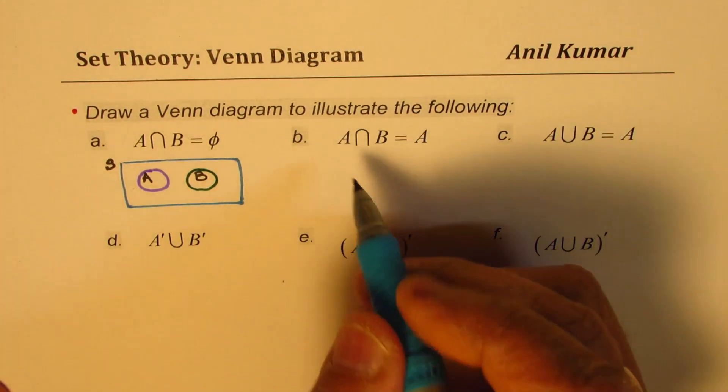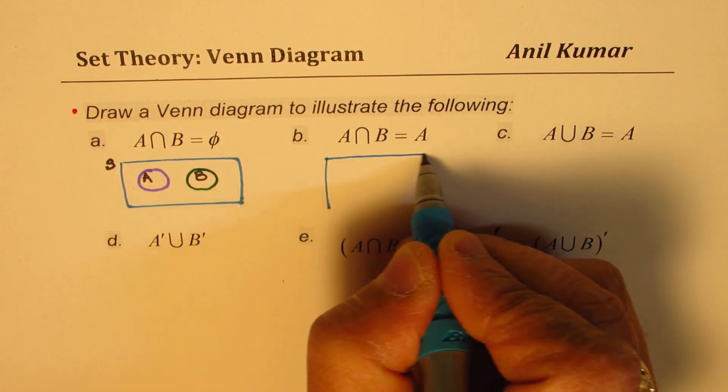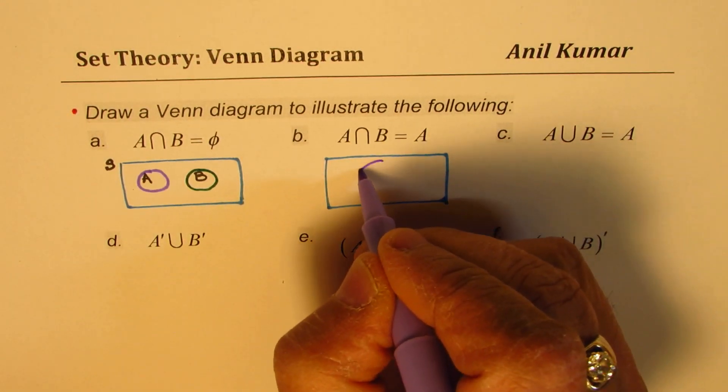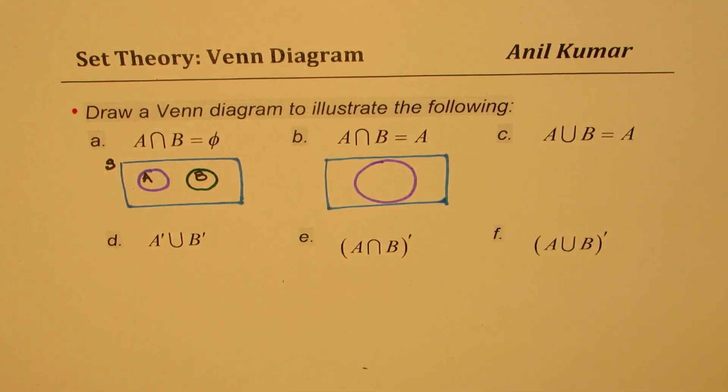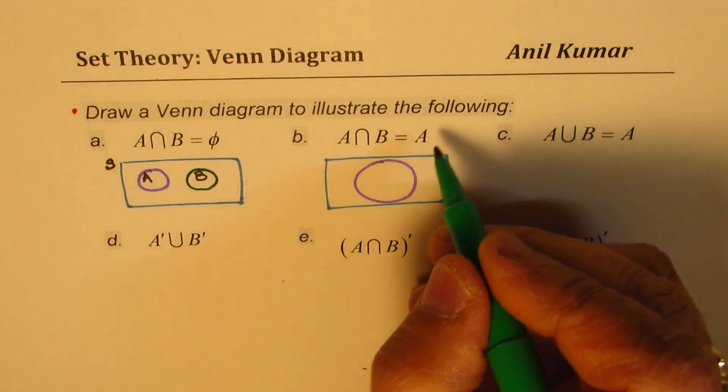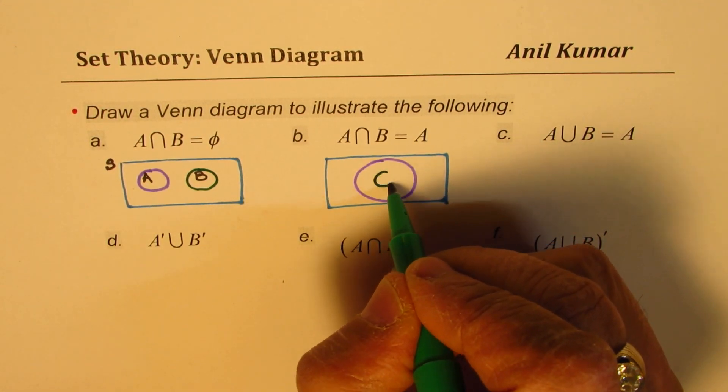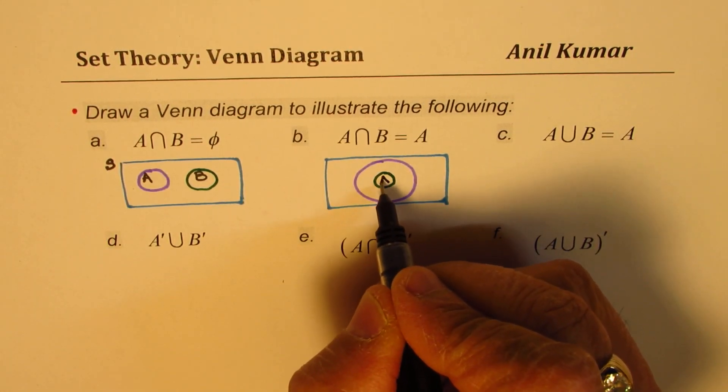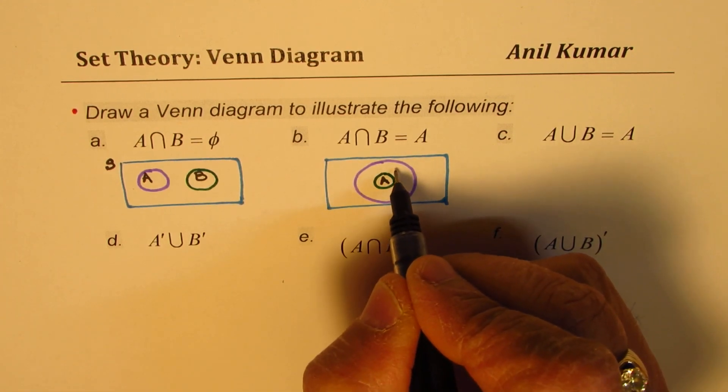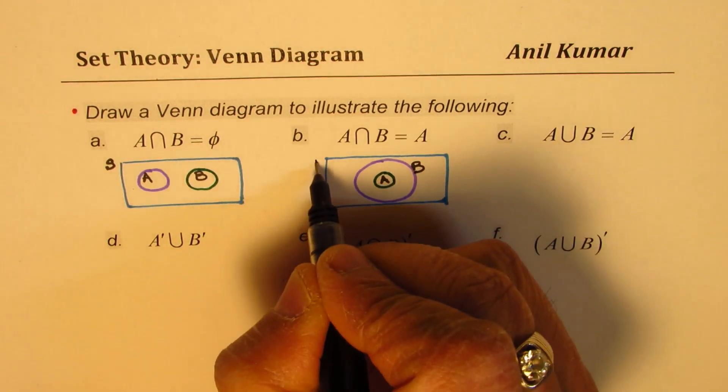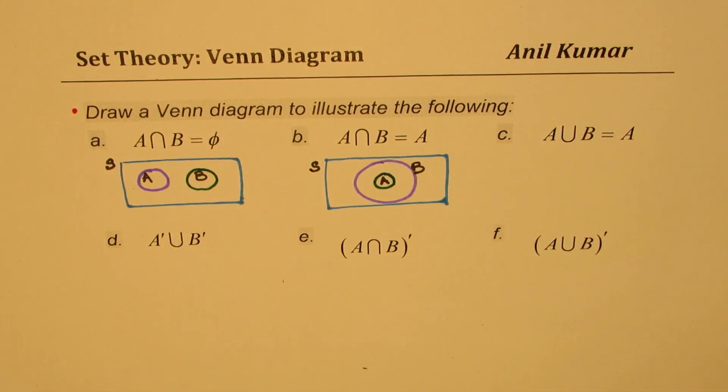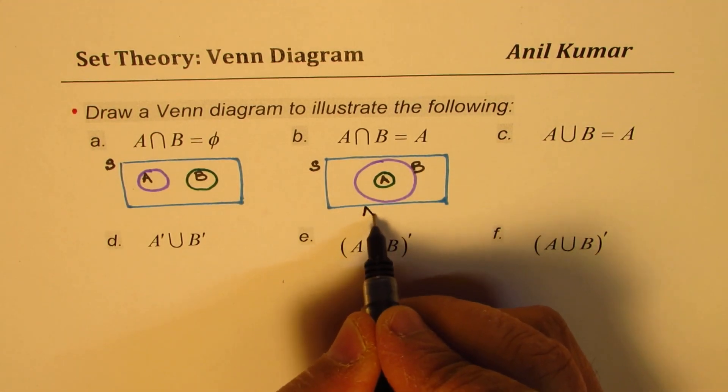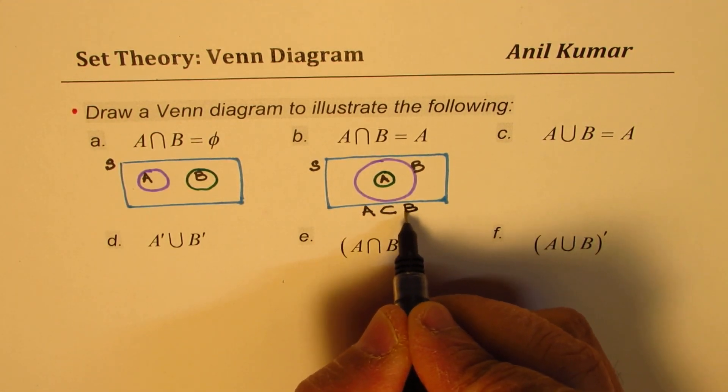Now the next one here is about intersection of two sets being a set itself. How is that possible? That really means that we have a bigger set and within that we have a smaller set. Now the smaller set we want this time is A. So that is how it is. So in this case intersection of A and B is A, right? So that means A is right there. So A is a proper subset of B and this is B for you and this is the universal set. Does it make sense to you? So when A is a proper subset of B then it is possible. So we can say A is a proper subset of B.